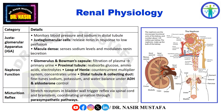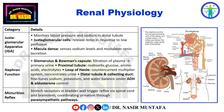Nephron function: the glomerulus and Bowman's capsule filter plasma, forming primary urine. The proximal tubule reabsorbs glucose, amino acids, and electrolytes. The loop of Henle creates a countercurrent multiplier system, concentrating urine. The distal tubule and collecting duct fine-tune sodium, potassium, and water balance under hormonal control by ADH and aldosterone. Stretch receptors in the bladder wall trigger the micturition reflex, sending signals to the spinal cord and brainstem to coordinate urination via parasympathetic pathways.